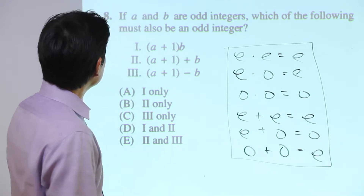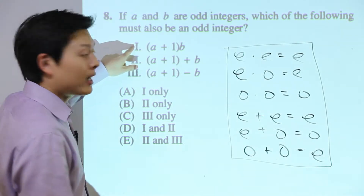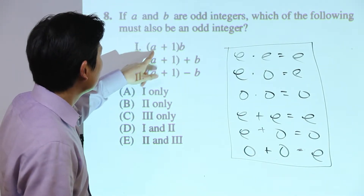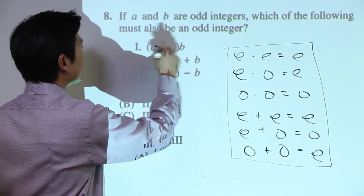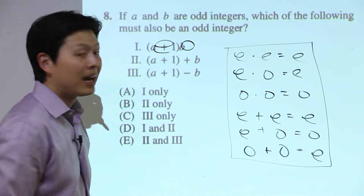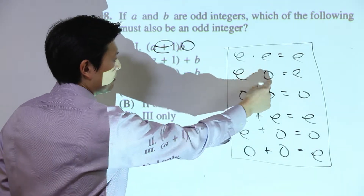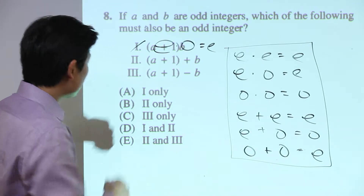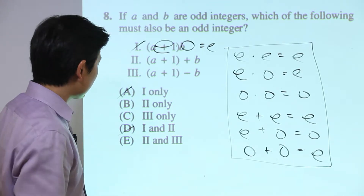In Roman numeral I, we have (a + 1) × b. Since a is odd and 1 is odd, odd plus odd is even. Then even times b — but even times anything is always even. So Roman numeral I is even, not odd. That lets us cross off answer choices A and D, which both include Roman numeral I.